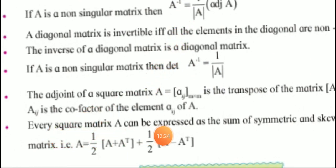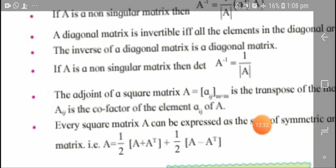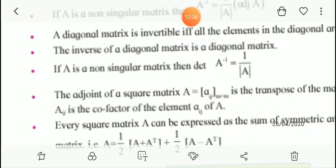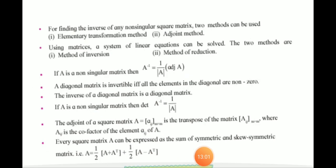Every square matrix A can be expressed as the sum of a symmetric matrix and a skew-symmetric matrix. To convert a square matrix, write it as one-half (A plus A transpose) plus one-half (A minus A transpose). The sum and subtraction give us the symmetric and skew-symmetric matrices respectively.